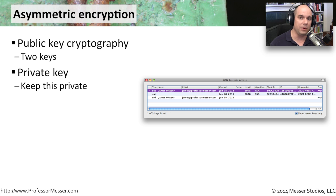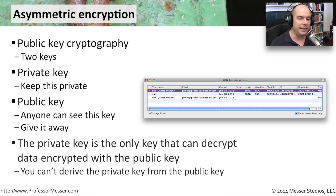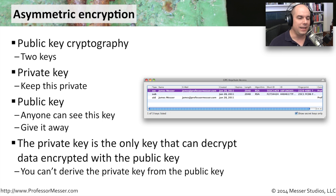The key that you're going to give to everyone else is called a public key. Give it to everybody — put it on a public server, post it on your website, stick it on your Facebook page. Everybody should have access to this public key, but nobody but you should have access to the private key. That's because the public key allows people to send you information in encrypted form, but the private key is the only key that can decrypt that data.